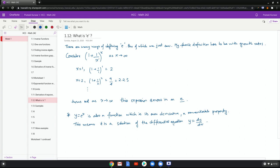Now my favorite definition has to do with growth rates. If you consider this function, one plus one over x to the x, as x goes to infinity, you plug in values, as x goes to infinity, this expression zeroes in on the value of e. Now this function we saw is its own derivative, which is a remarkable property. This means it's a solution of the differential equation, y equals dy over dx.